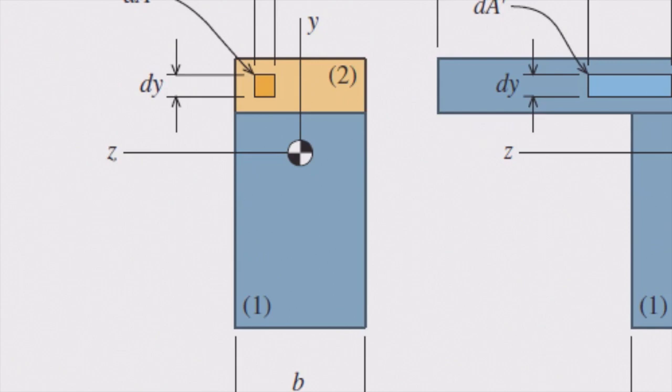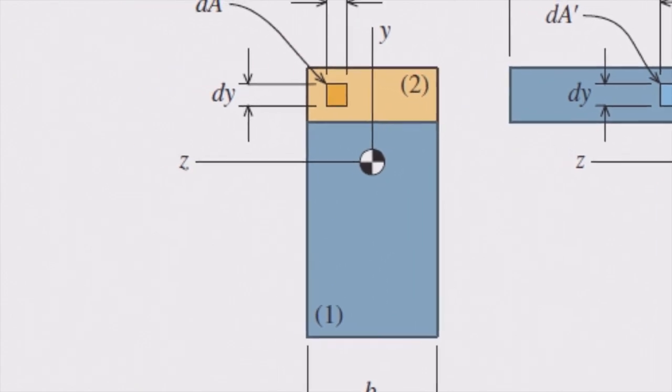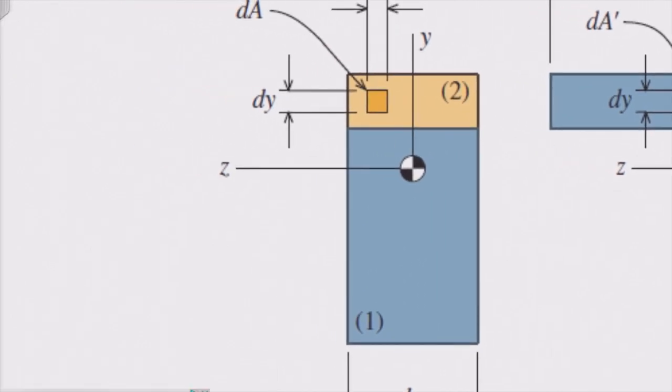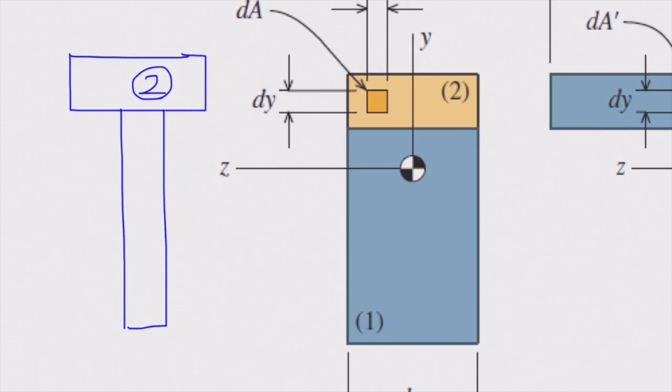We use the reverse n factor, which would be modulus of elasticity E1 divided by E2. That would be smaller than one, meaning I need to reduce the width of the section. Let me show it here. The new section looks like this. This is the original shape two, and this is the reduced shape. This section is made of material two.